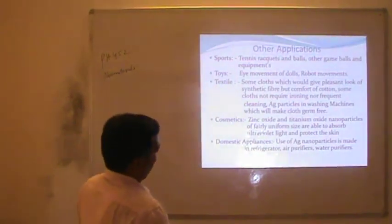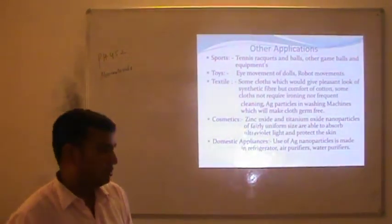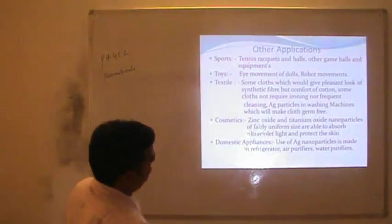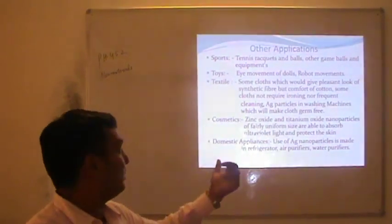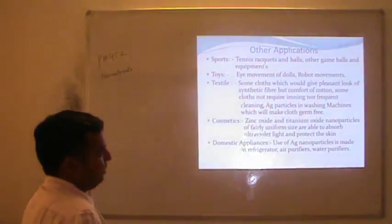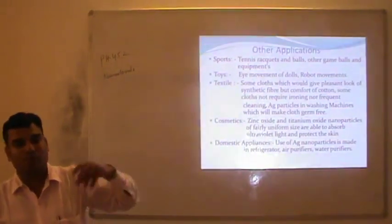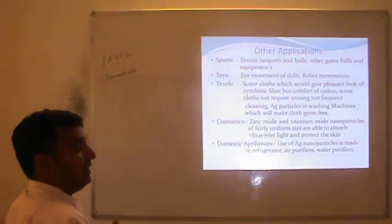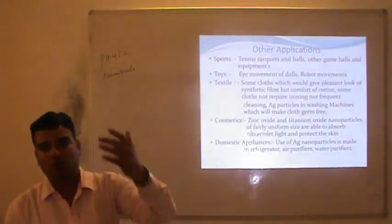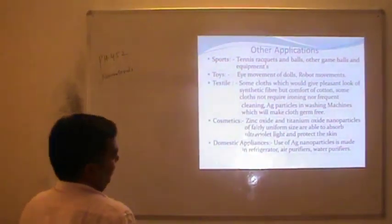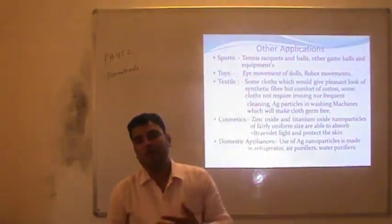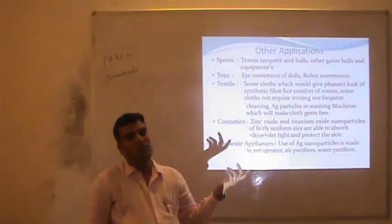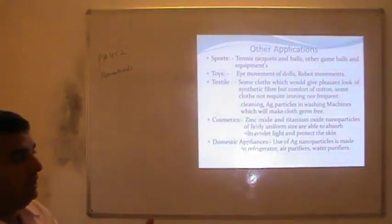Some other applications of nanomaterials: in sports, tennis rackets and balls are used which are very strong with light weight. Other game balls, equipment, and toys like eye movement or robot movement are benefits of nanotechnology. In textiles, by use of synthetic fibers with nanomaterials added, they give the feeling of natural material even without requiring everyday washing, cleaning, or ironing. Washing machines containing silver nanoparticles make clothes germ-free and maintain the shining of the clothes.